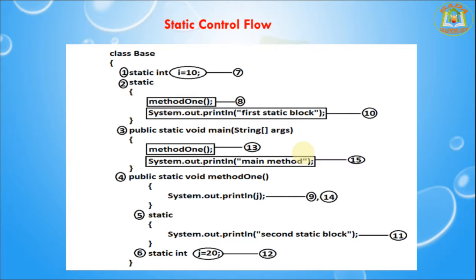The compiler first checks identification of static members from top to bottom in our program. Next, execution of the static variable assignments and static blocks from top to bottom. Next, execution of the main method. First it checks what are the static members, declarations, static blocks, and static methods.